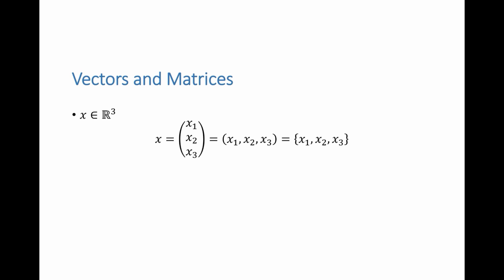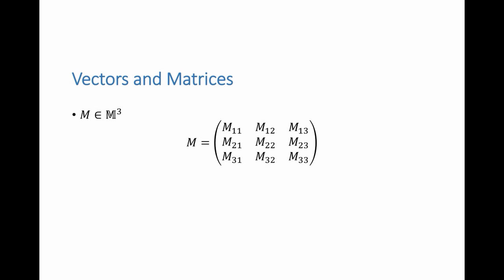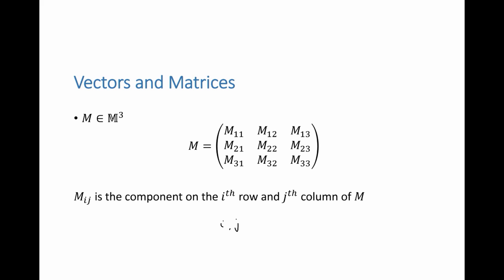Vectors are defined as elements of 2, 3, or n-dimensional vector spaces. For example, X as an element of R³ has three components. We do not differentiate between column and row representation, and we can also use curly brackets since we are using Mathematica, which defines vectors using curly brackets. A general element of X is designated X_i, where X_i is the i-th component and i takes values 1, 2, or 3. A matrix M in the space of all 3×3 matrices has component M_{ij} on the i-th row and j-th column, where i and j take values 1, 2, or 3.